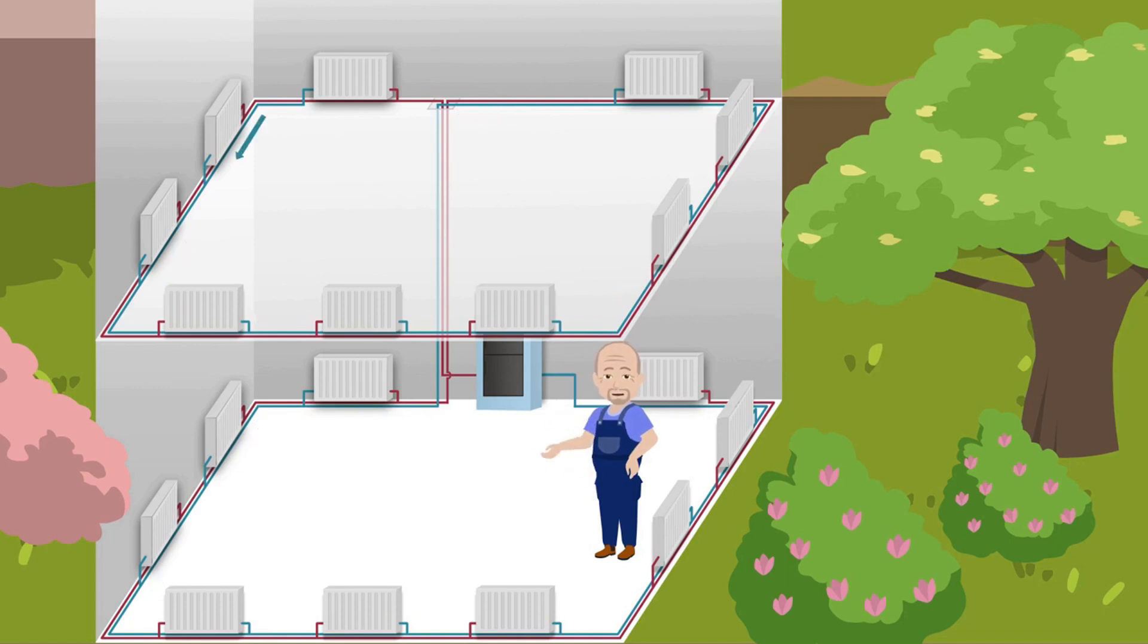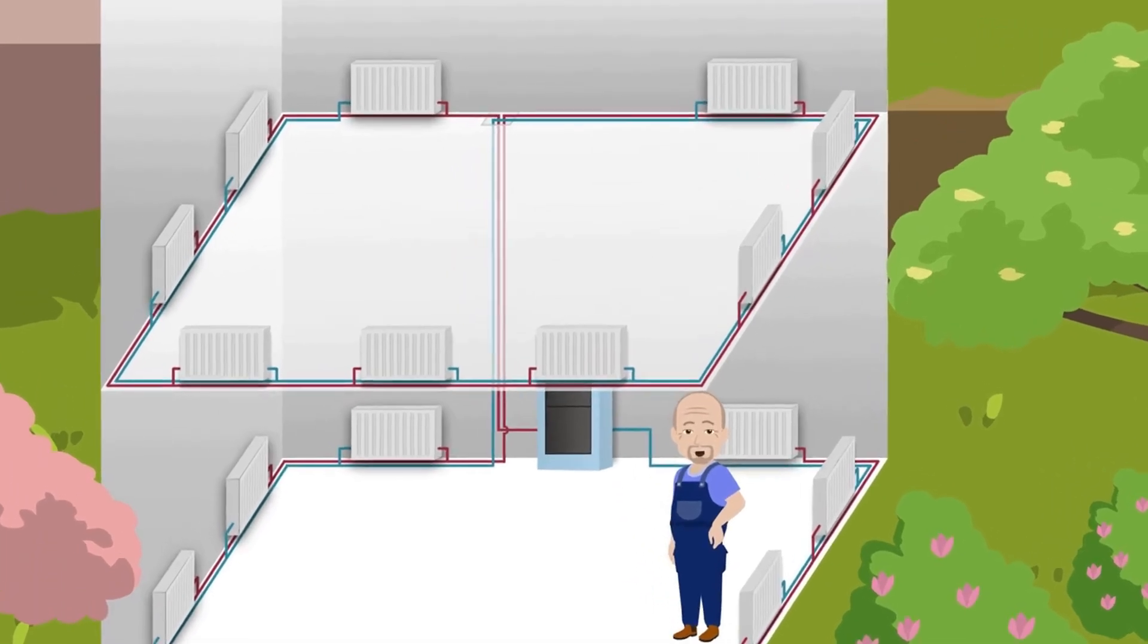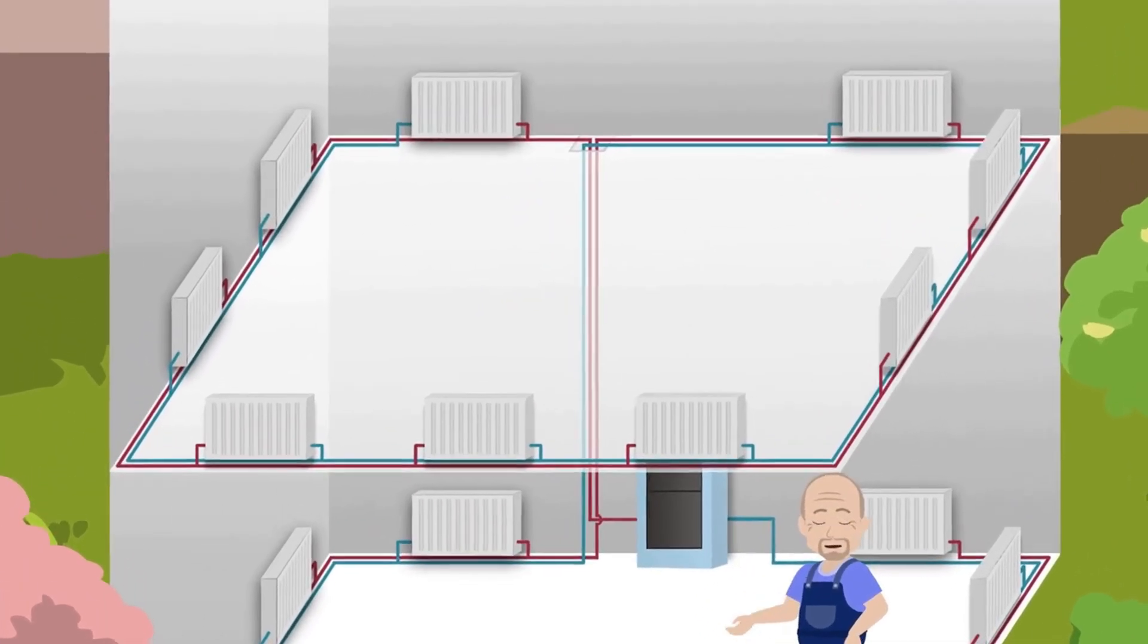Then, the pipe bypasses all the radiators on the second floor, reaches the two extreme radiators and ends here. They are connected with thin pipes.